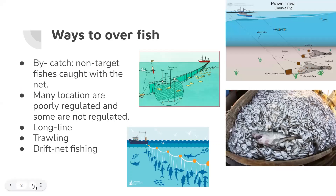Ways to overfish: Bycatch refers to non-target fish caught with the net, which you can see at the bottom right corner. Many locations are poorly regulated and some are not regulated at all. Longline fishing is shown at the bottom left corner, trawling at the top right corner, and driftnet fishing at the top left corner.